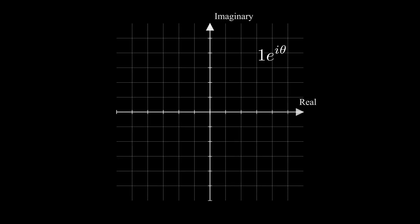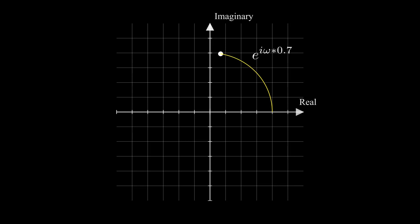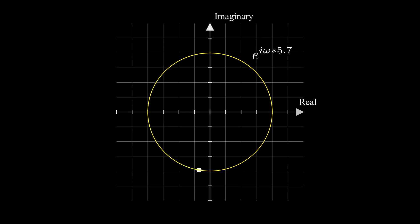We know that e to the i·θ describes a point in a complex plane with magnitude of 1 and phase of θ. If θ is a function of time, then at t=0, θ equals 0 and we start at this point. As time increases the value of θ increases, and as time goes on we progress around this circle — so we can think of this complex exponential as a function that moves in circular motion in the complex plane with angular frequency ω. The higher the ω, the higher the rotational speed.